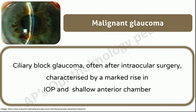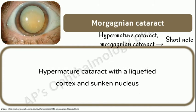Malignant glaucoma: ciliary block glaucoma, also called aqueous misdirection syndrome, often occurring after intraocular surgery, characterized by a marked rise in intraocular pressure and shallow anterior chamber. Atropine is the drug of choice. Morgagnian cataract: a hypermature cataract with a liquefied cortex and sunken nucleus. If not treated, the liquefied cortex can leak through micro-openings in the posterior capsule and be engulfed by macrophages that then block the trabecular meshwork, resulting in phacolytic glaucoma. Or the lens may rupture, and the exposed nucleus and cortex can incite an inflammatory reaction called phacoanaphylactic uveitis.